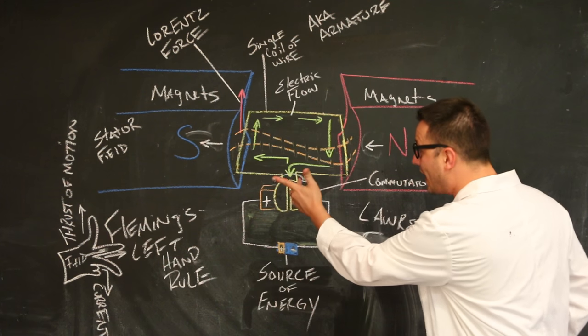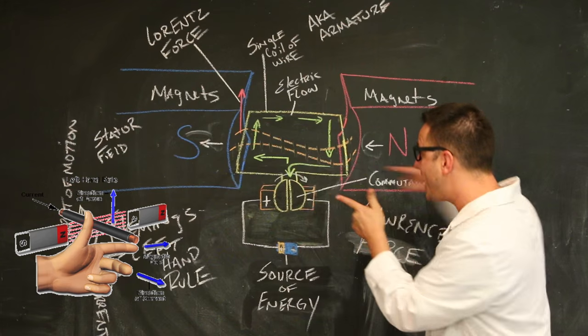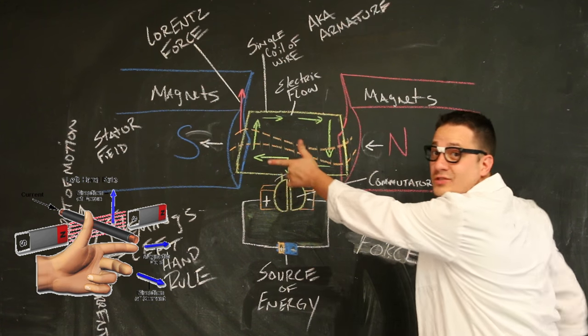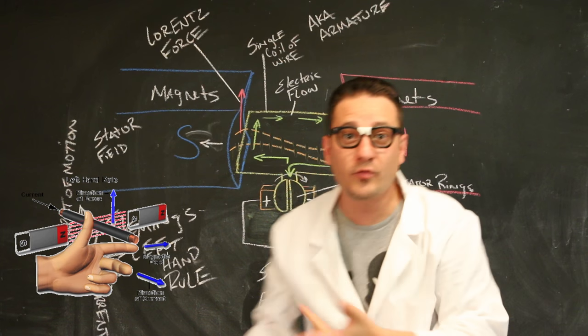Two, Fleming's law. If you put your hand like this, you have magnetic field going in that direction, current going in that direction, then your thumb equals the force. So that tells you which direction everything's going.